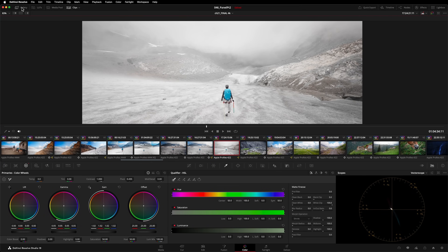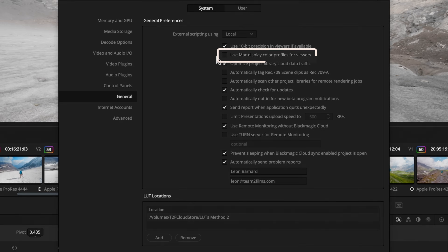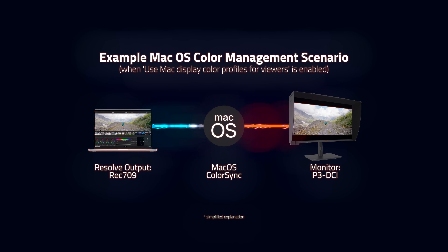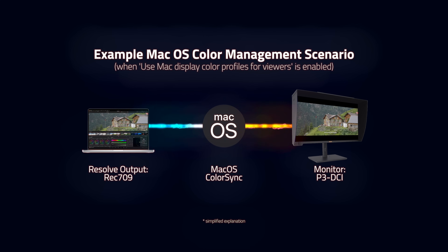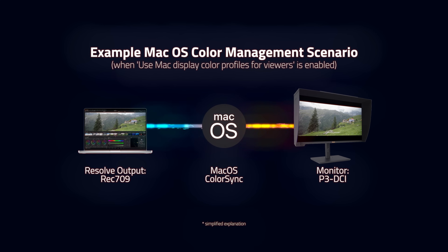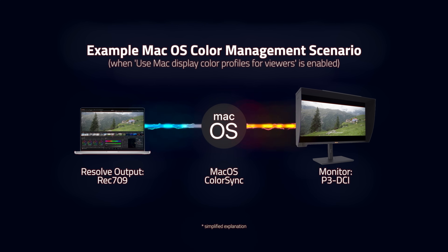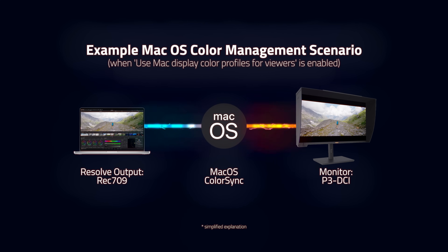On a Mac, this approach works best when you have the Use Mac Display Color Profiles for Viewers option enabled. Once enabled, macOS will apply the appropriate color management to your viewer image so that it renders correctly on your screen. For example, if you're grading in Rec. 709 but your display is configured for P3, the OS will now color manage the image appropriately. Please note, this is still reliant on your monitor being calibrated and the correct ICC profiles being loaded into your system settings. If you're on a Windows computer and your grading output does not match the color space of your monitors, this approach is significantly more complex and might require the creation of things like Calibrated Viewing LUTs.